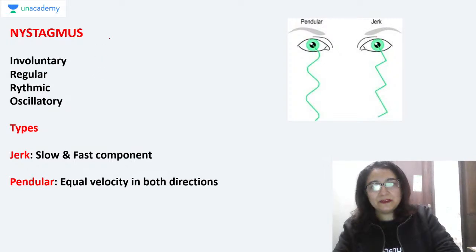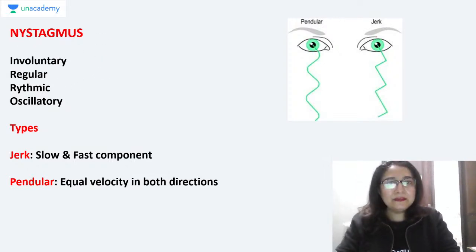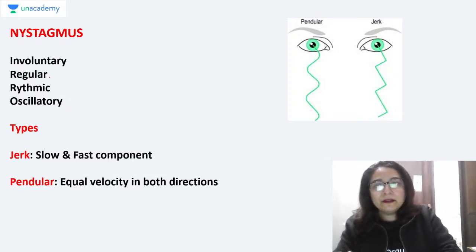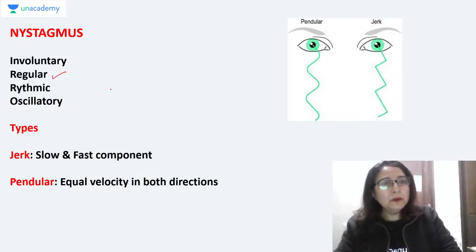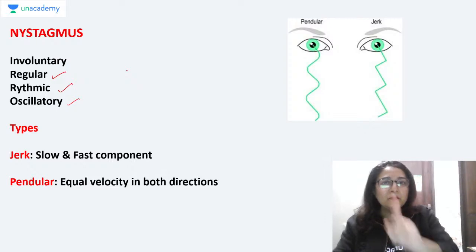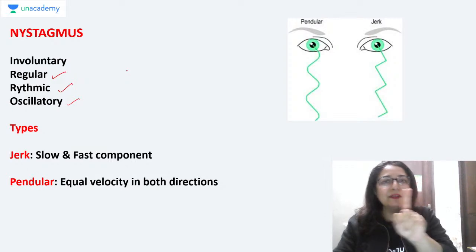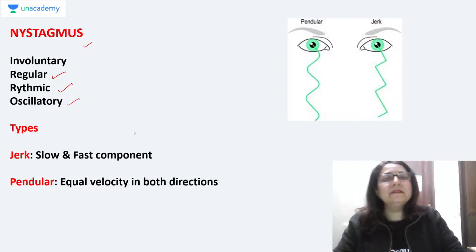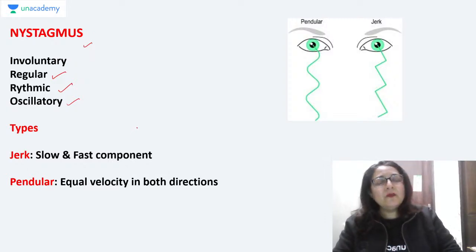So what do we understand by nystagmus? Nystagmus is a type of involuntary movement of the eye. These involuntary movements are characterized by their regularity — they are regular, rhythmic, and oscillatory in character. These are movements akin to a pendulum or any type of regular rhythmic oscillatory movement.